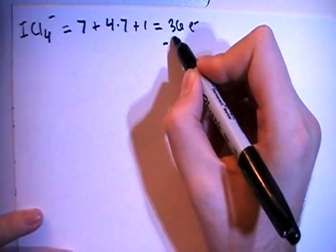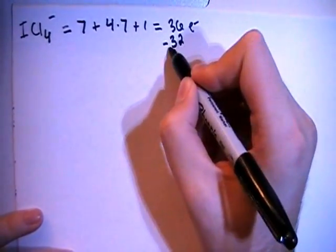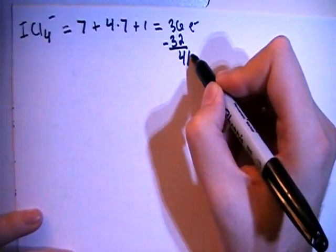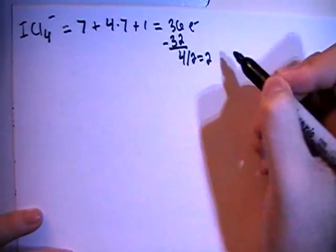We can subtract out the largest multiple of 8, which in this case will be 32, leaving us with 4 electrons. Divide that by 2 to give us 2 non-bonding pairs.